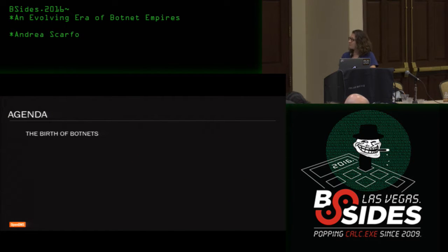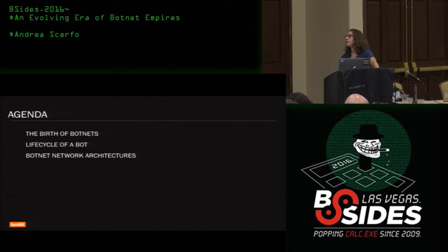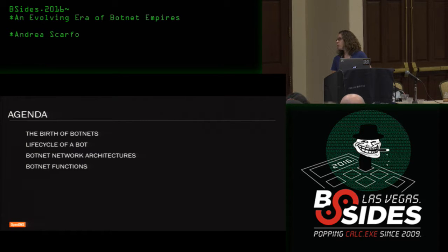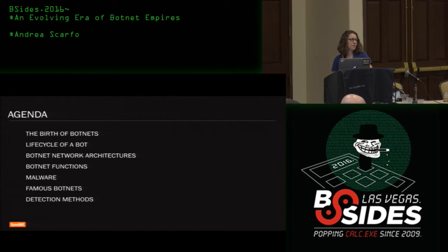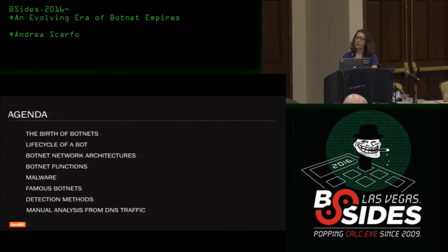The agenda for today: we're going to start with a history of botnets, an overview of the birth of botnets, then move on to the life cycle of a bot, highlight some botnet network architectures, botnet functions, different malware that bots usually drop, famous botnets, some detection methods we use at OpenDNS, and manual analysis of botnet domains from DNS traffic.